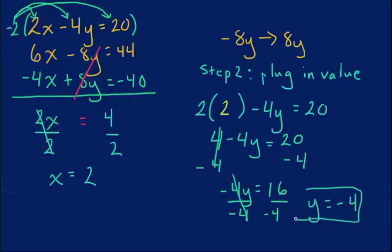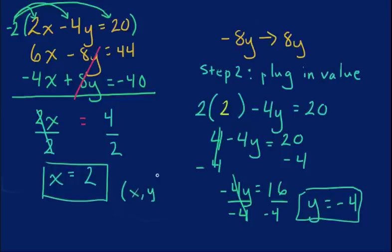So these are my two values. You definitely want to plug these in to check, especially if you're taking a test. But we write it in x, y form as our answer, so our answer would be (2, negative 4). What systems of equations tells us is that on a linear graph, the point (2, negative 4) is where both of these equations equal each other, or it's where they meet. We'll go ahead and do a video to show you how to check that.